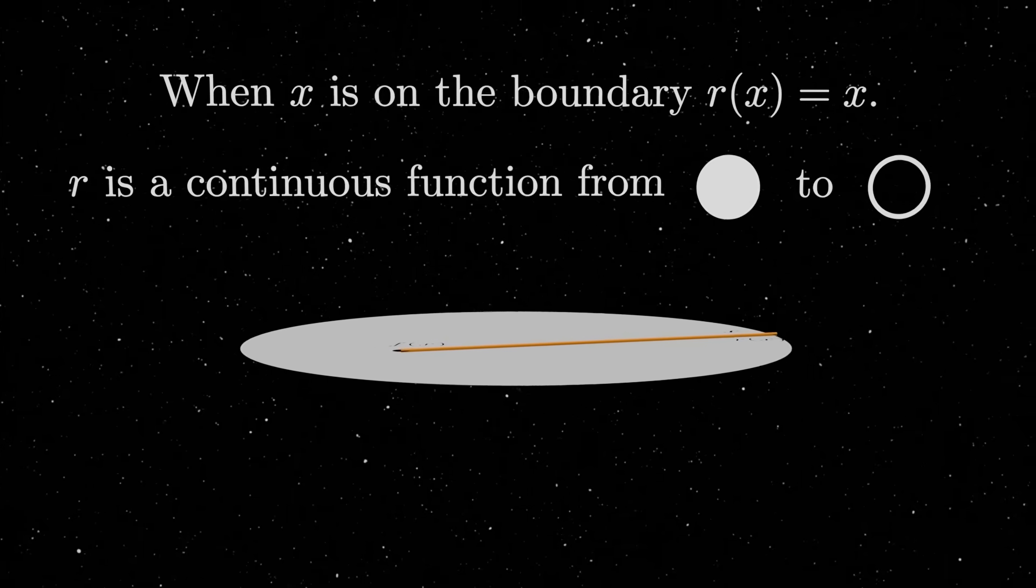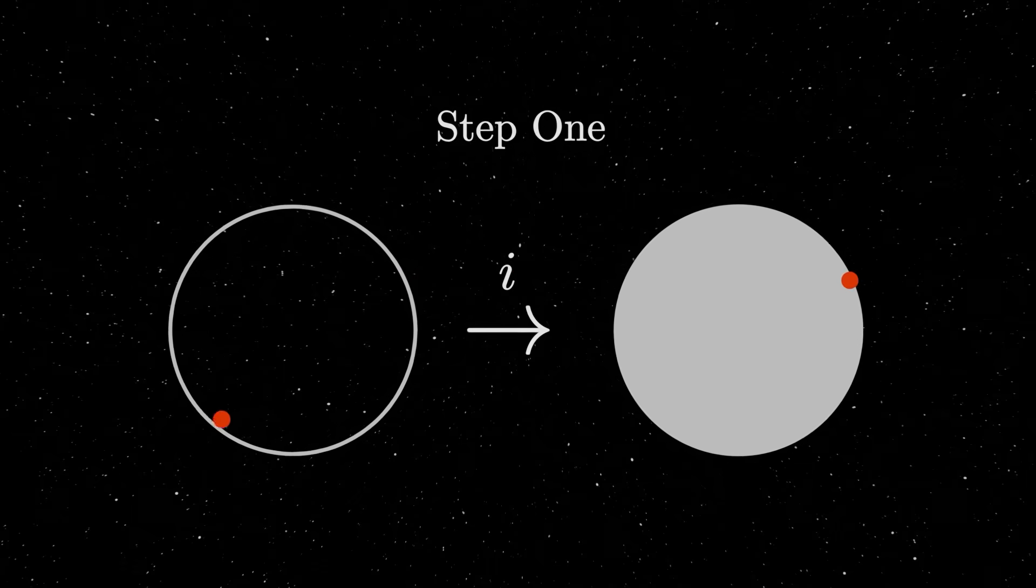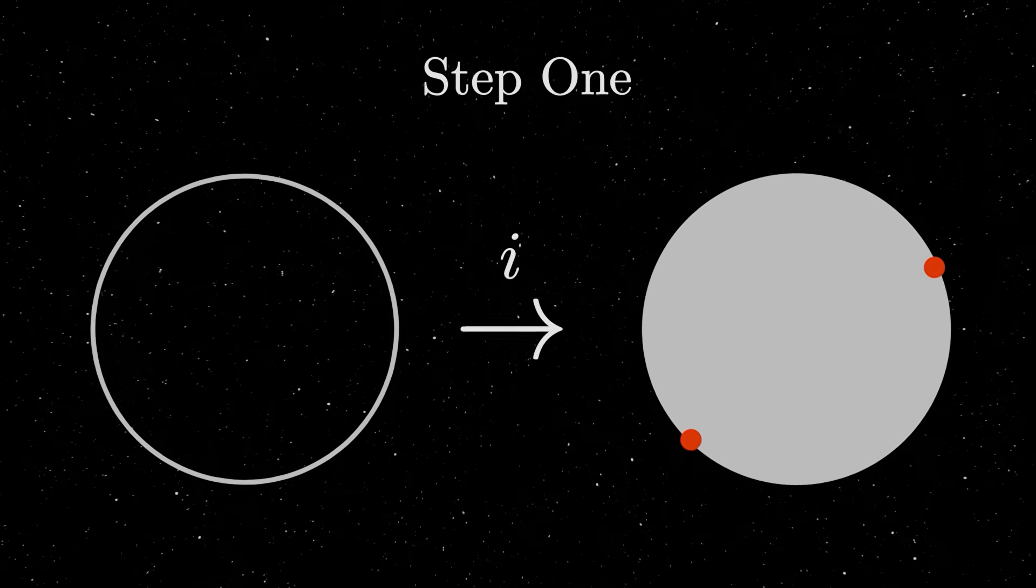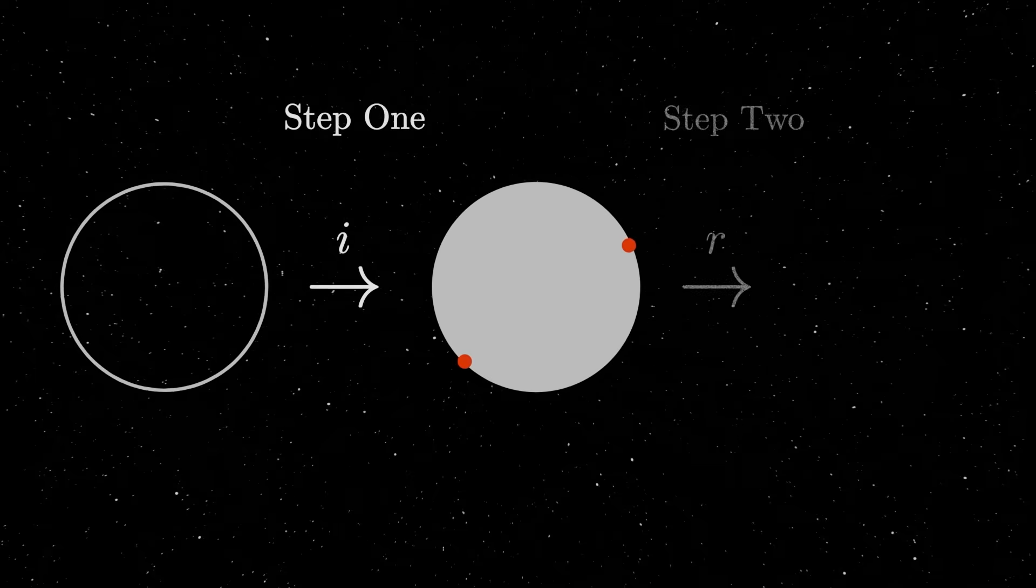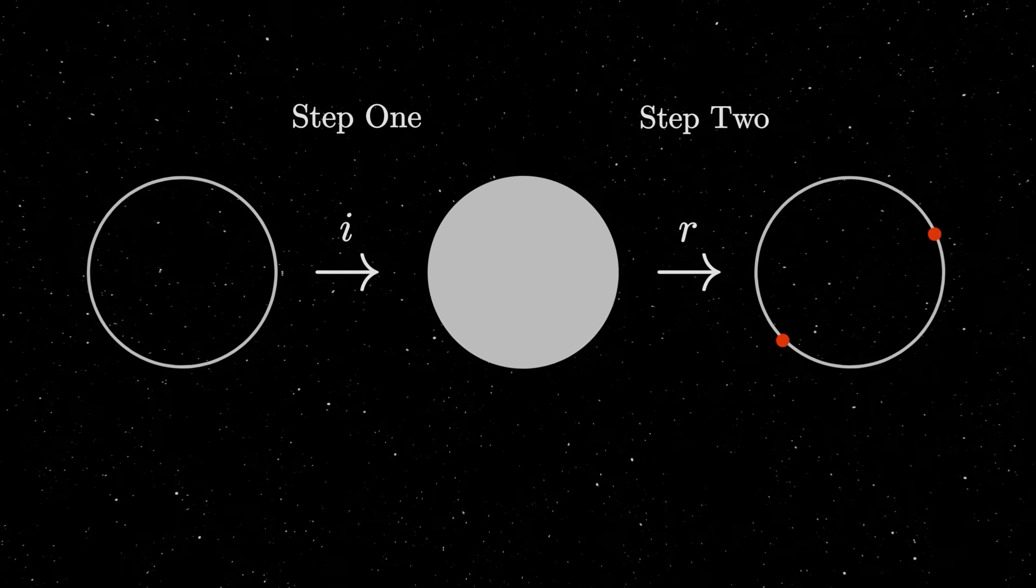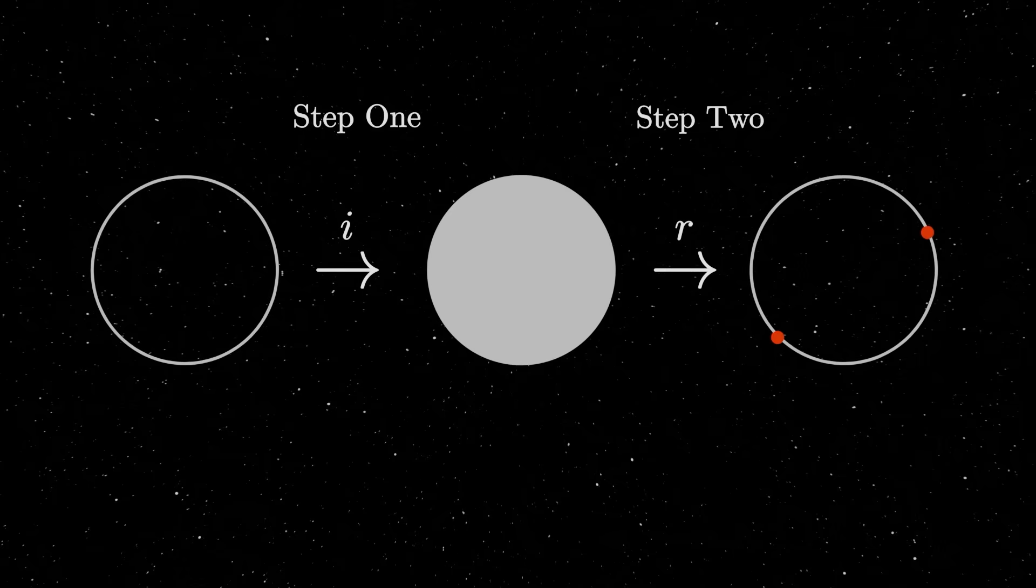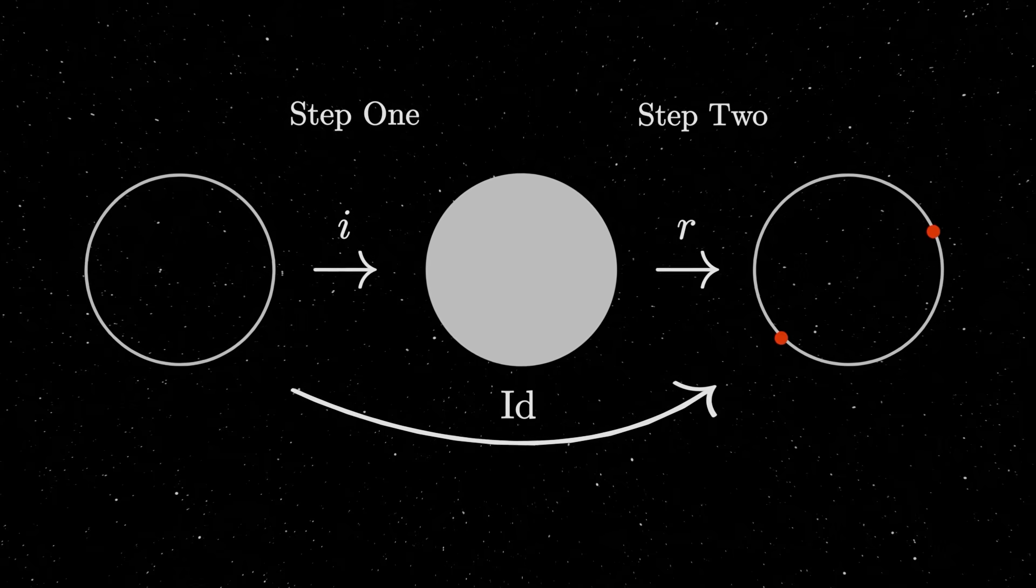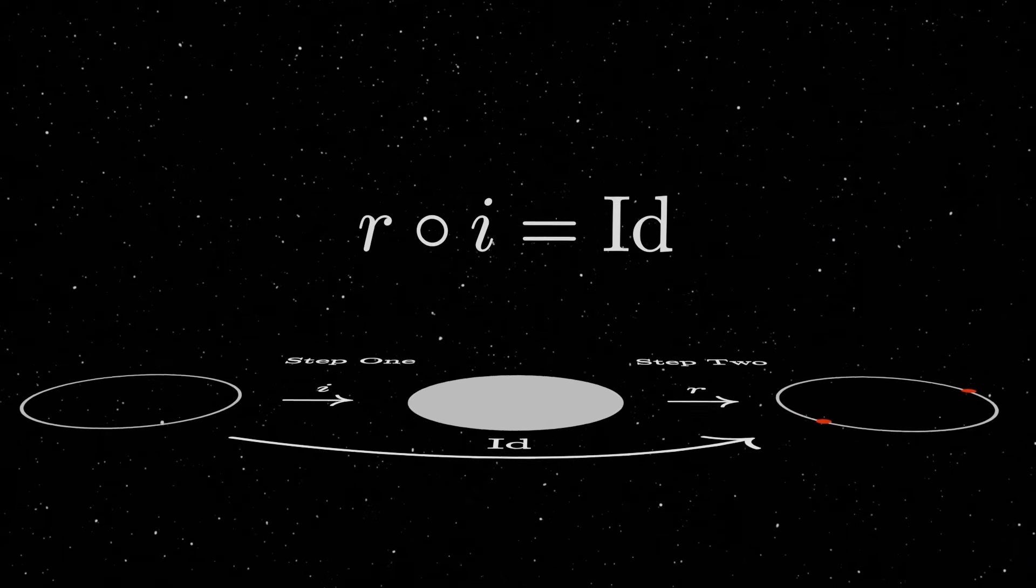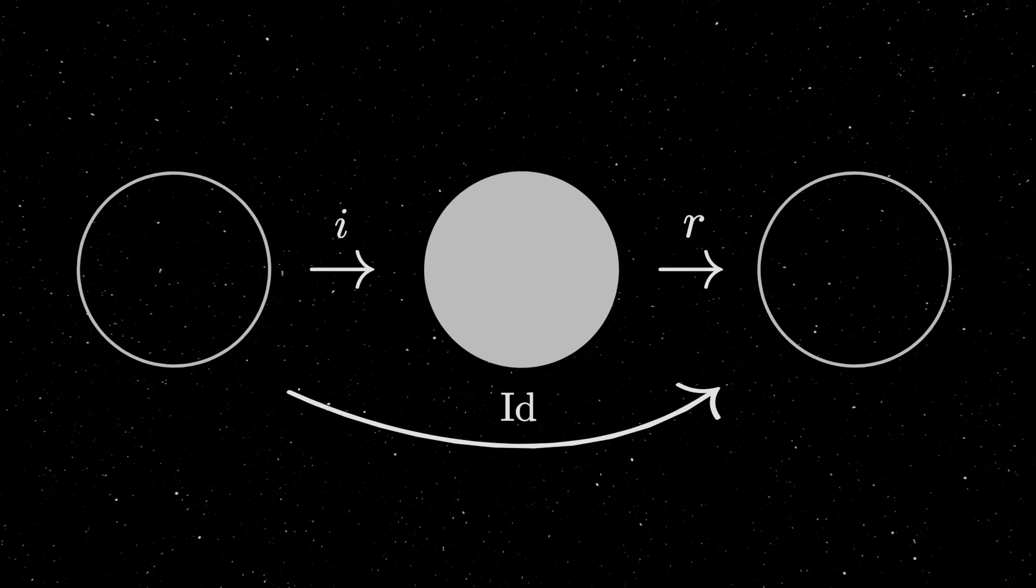Now, here's where things get nice. We first consider an inclusion map from the proper circle onto the field circle. This means that we take a point from the proper circle to exactly where it should be on the field circle. Now, for the second step, we take a point from the field circle to r of x, which is back on the proper circle. By composing the two maps, we get a map from the proper circle to itself. But there is something special about this map. All the points on the circle are just mapped exactly to themselves. So this map is really just the identity from the circle to itself. We draw this diagram right here to represent the situation.